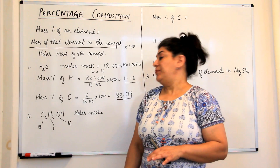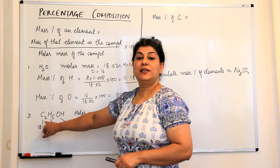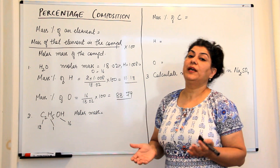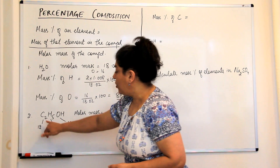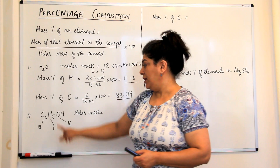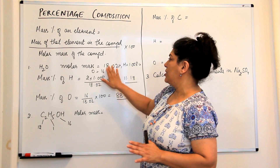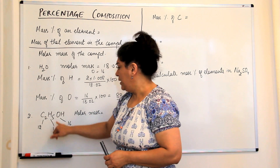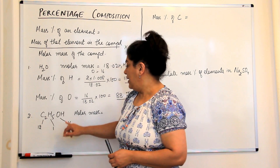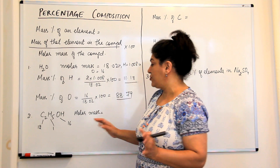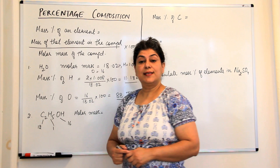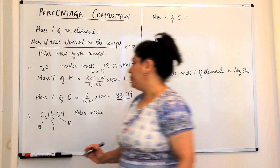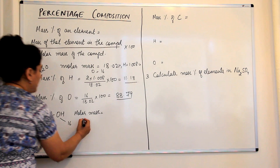Now we come to a problem: you have ethanol, C₂H₅OH, and you want to find out the mass percentages of all the elements present. Ethanol has carbon, hydrogen, and oxygen. To make calculations easier, I'm rounding: carbon = 12, hydrogen = 1, and oxygen = 16.